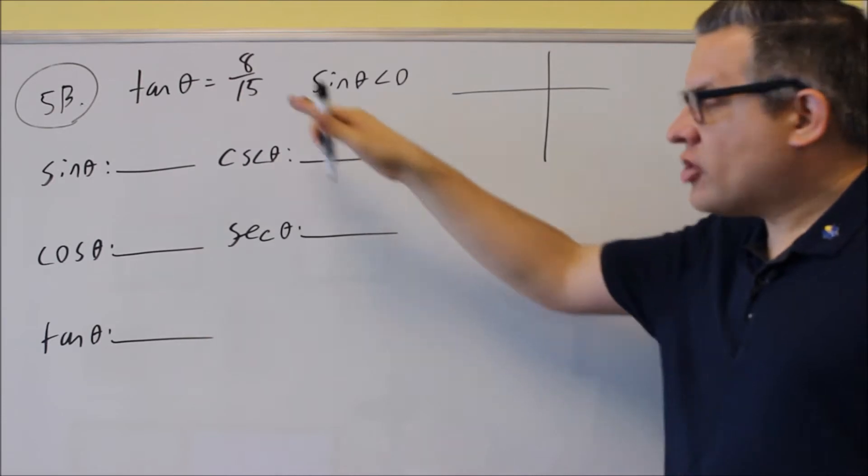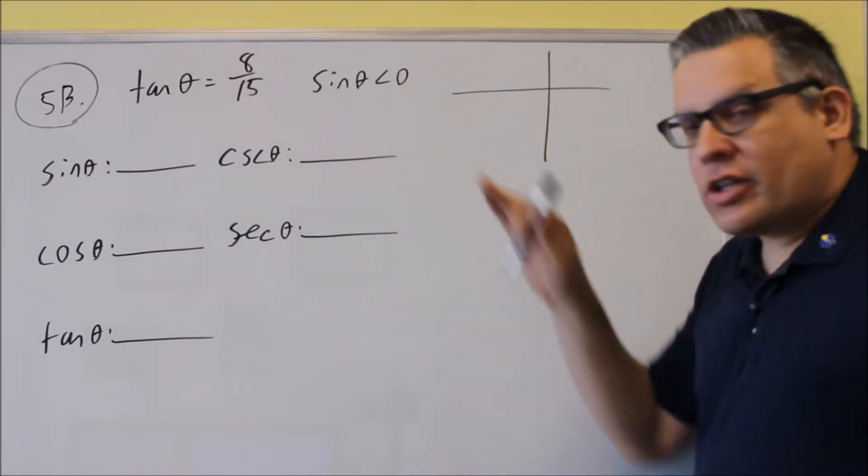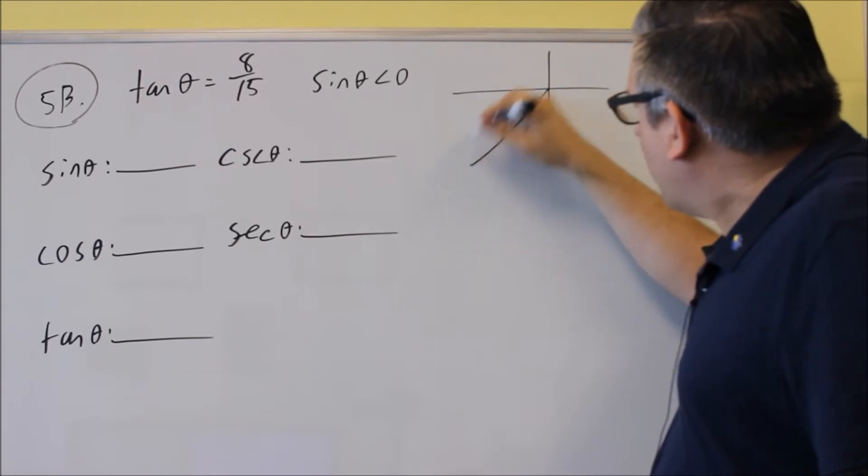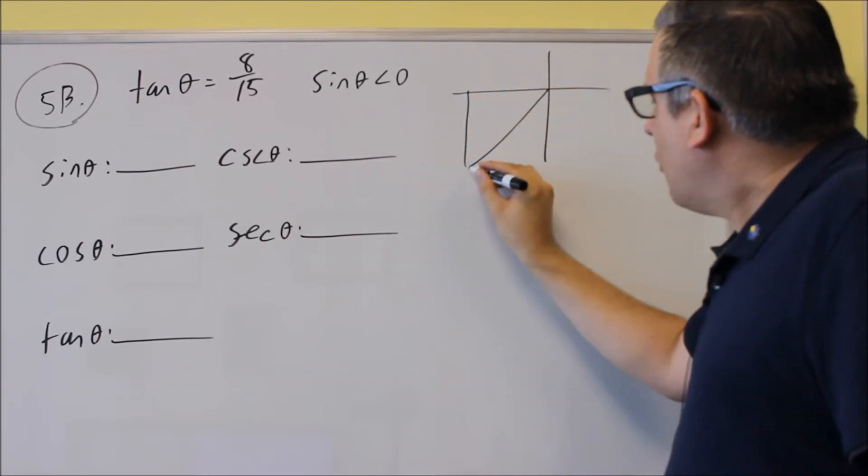We want a quadrant where tangent is positive and sine is negative. That's this one. So we want to draw our triangle in the fourth quadrant.